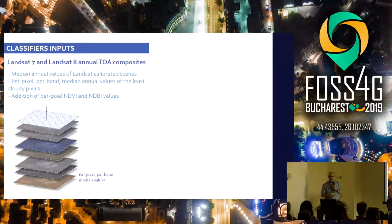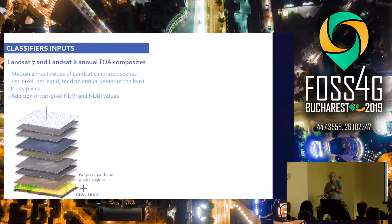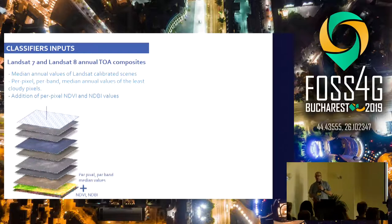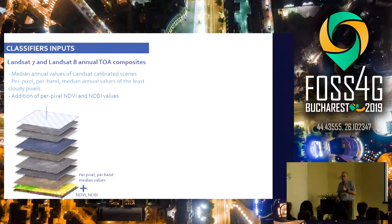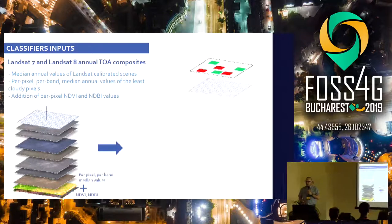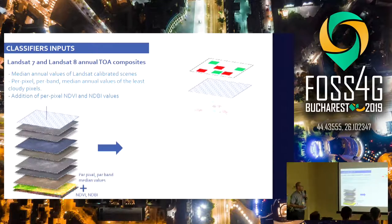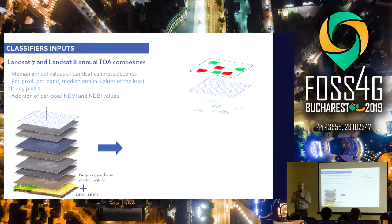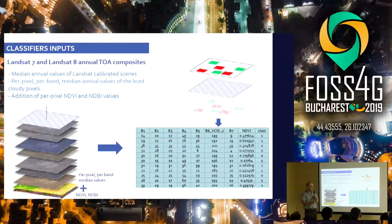Additionally, we calculated other spectral indices — for example, NDVI, which is an index to map vegetation, or NDBI, which is another index frequently used to map built-up land cover. Now we have the polygons that we created, and we also have these per-pixel values. We sample all the pixels that overlap with these examples, and each pixel will get the label of the overlapping polygon.